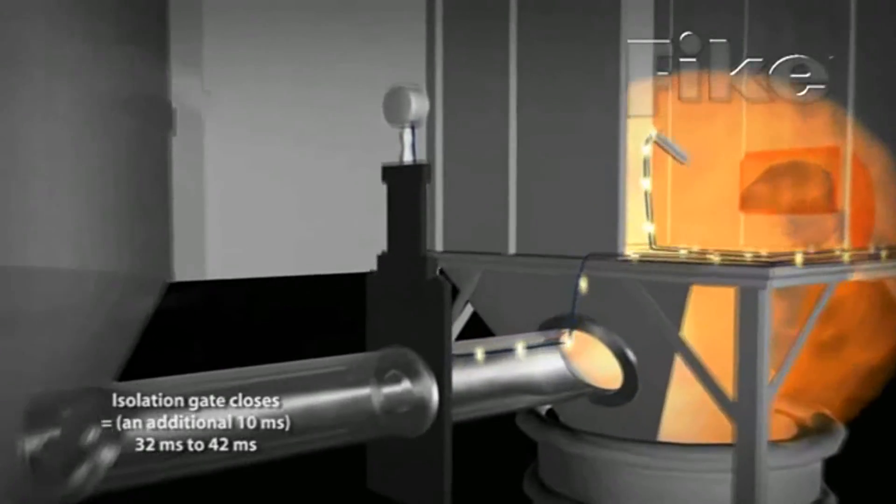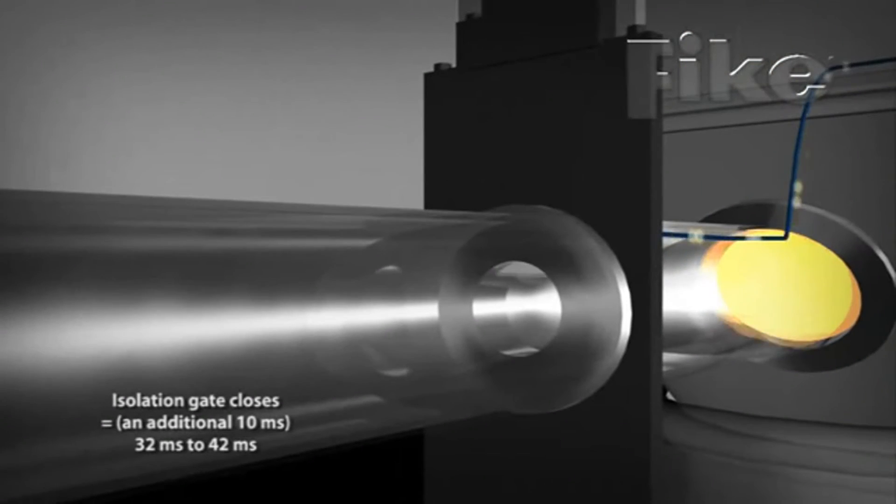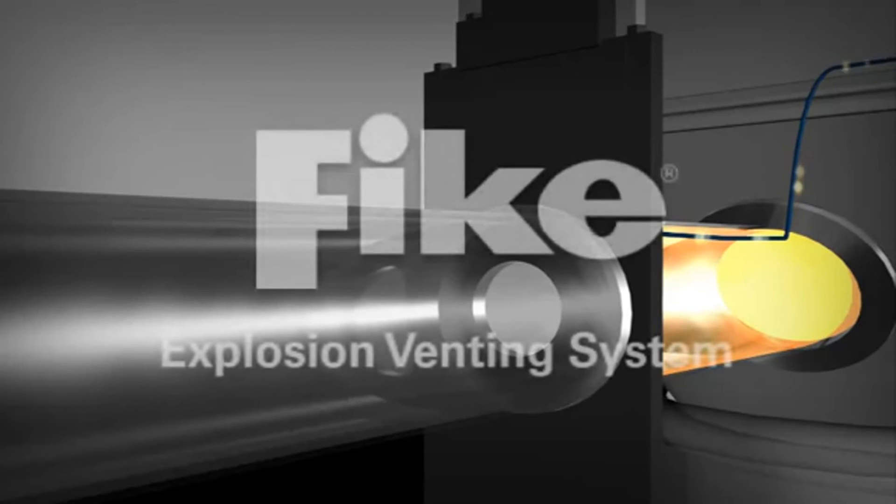The gas cartridge actuator drives the piston on the isolation valve, closing the slide gate and providing mechanical isolation in the duct.